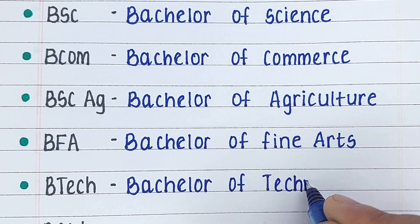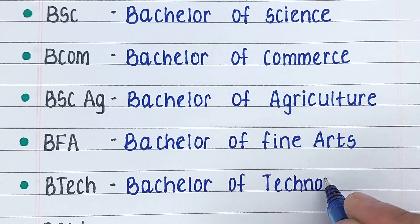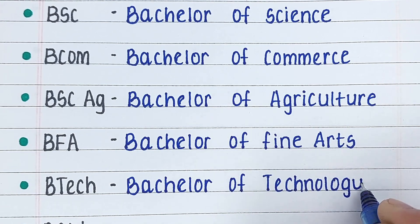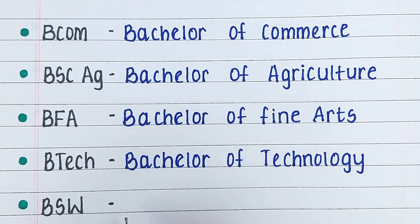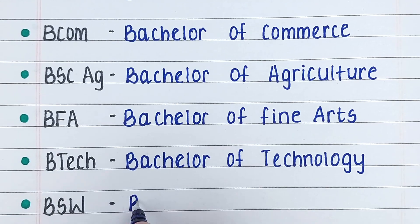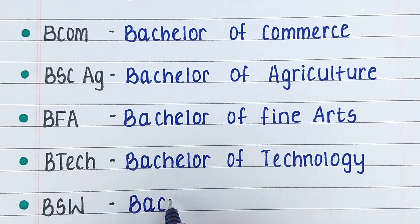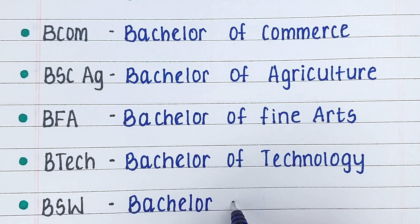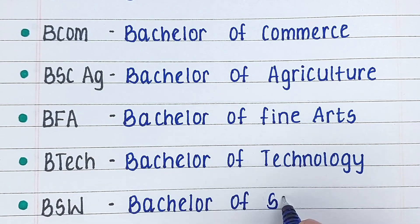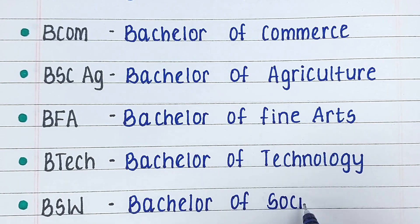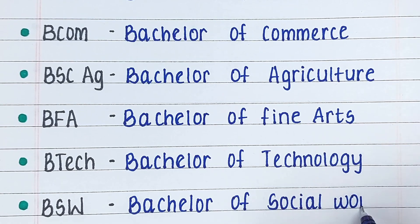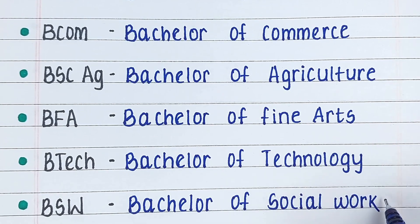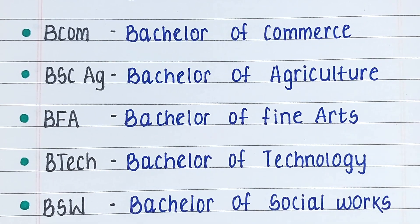BTECH stands for Bachelor of Technology. Next is BSW. BSW stands for Bachelor of Social Work.